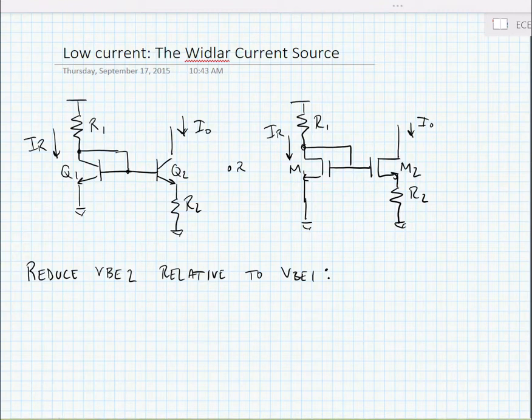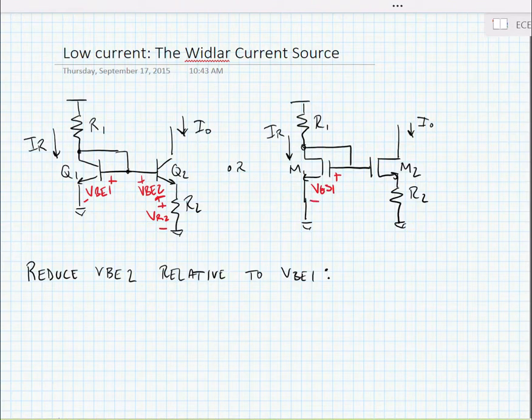If we look here, we have VBE1 across Q1. Based on KVL, VBE1 has to equal VBE2 plus the resistor drop VR2. We can say the same thing for the MOSFET device, except we use VGS instead of VBE. Again, VGS1 equals VGS2 plus VR2.